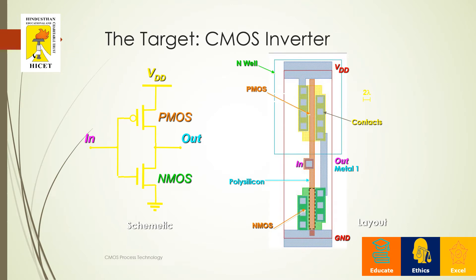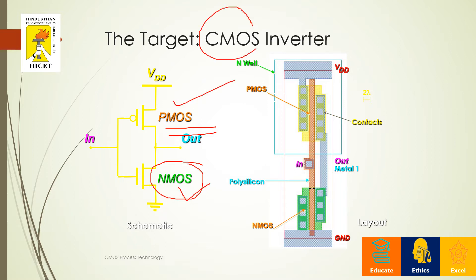Now, consider our target, the CMOS inverter. We have a PMOS and an NMOS transistor. The combination of PMOS and NMOS together is called CMOS, which stands for Complementary Metal Oxide Semiconductor. This acts like an inverter — when you provide an input, it produces the inverted output. In order to create this layout, we need to know certain basic fabrication steps.